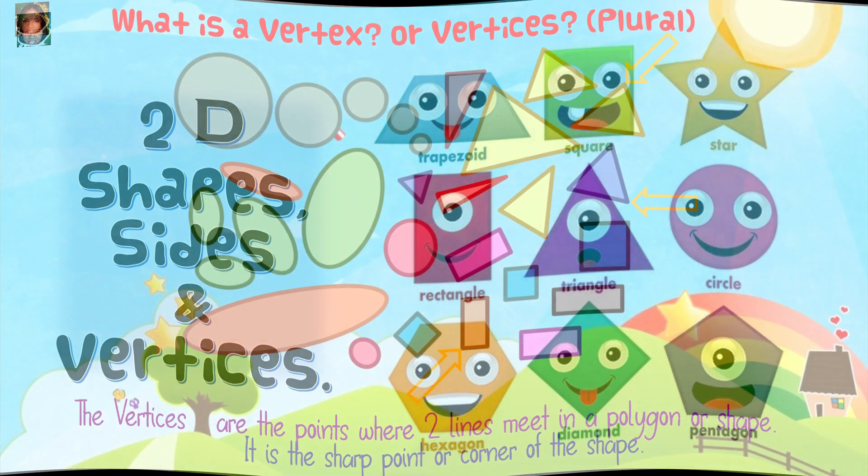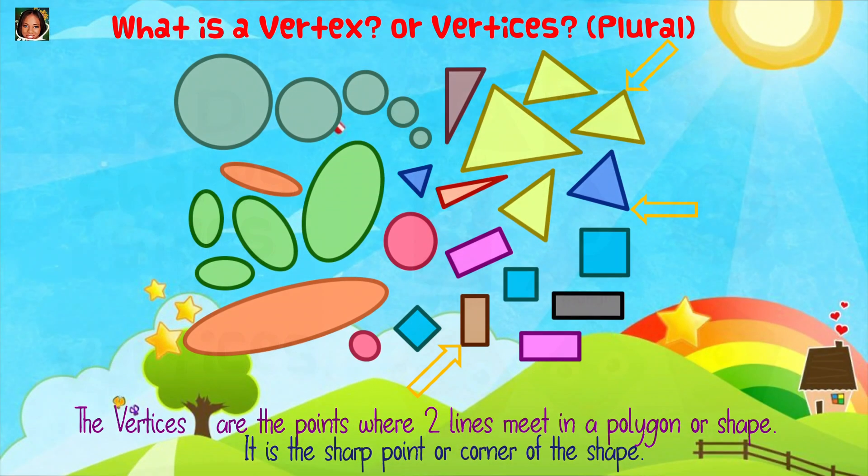What are vertices? The vertices are the points where two lines meet in a polygon or shape. It is the sharp point or corner of the shape.